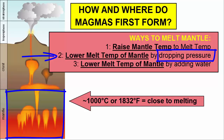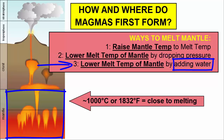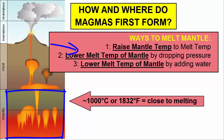When pressure is low, a rock's melting temperature drops, and it will melt more easily. Similarly, in the presence of water, a rock's melting temperature also drops. So now we see that there are three ways to melt a hot rock: raise its temperature to its melting point, or drop its melting point by dropping its pressure, or adding water.